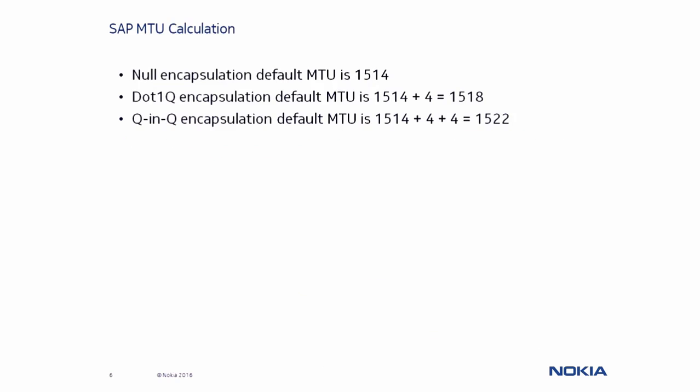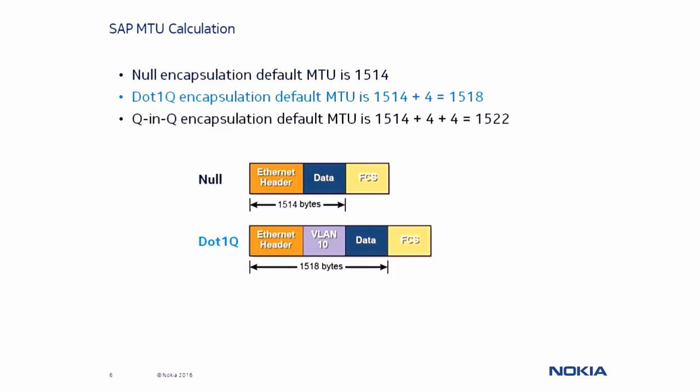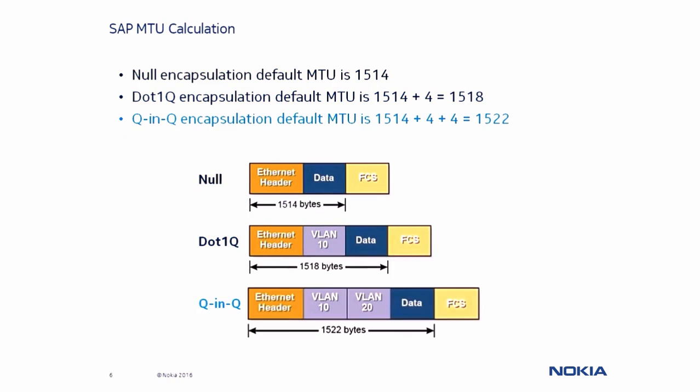A physical access port can be configured for one of three encapsulation types, and each will set a different default SAP MTU size. A port configured with Null Encapsulation sets the default SAP MTU to 1514 bytes. .1Q Encapsulation provides four extra bytes for a single VLAN tag, which increases the default SAP MTU size to 1518. QinQ Encapsulation encompasses two 4-byte VLAN tags, bringing the default SAP MTU size to 1522.